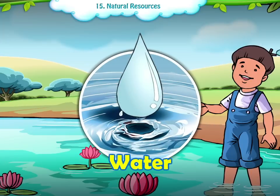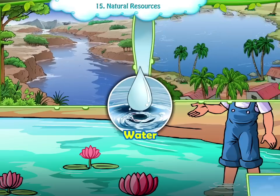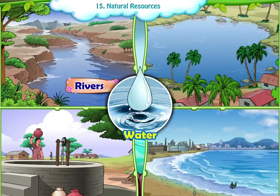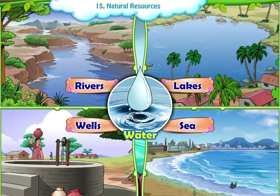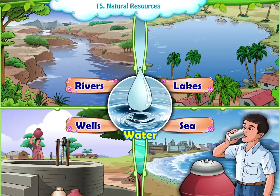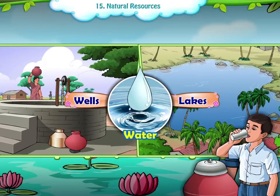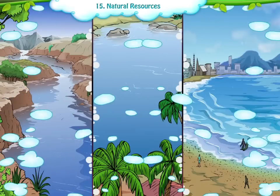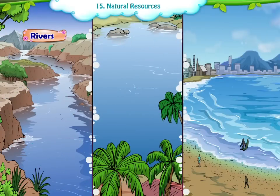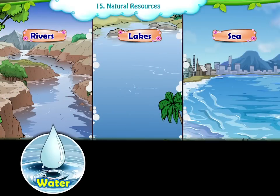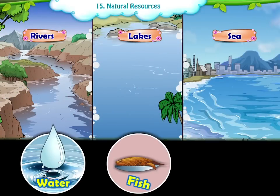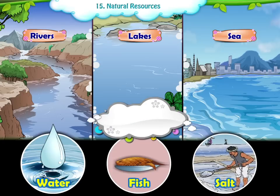Water. We find water in rivers, lakes, wells and seas. We get drinking water from the wells and the lakes. Similarly, rivers, lakes and the sea give us water. Fish and salt are natural resources obtained from water.